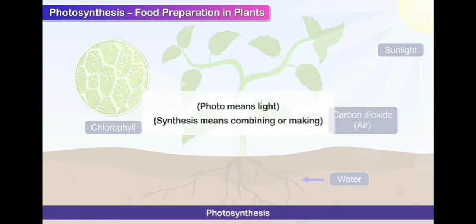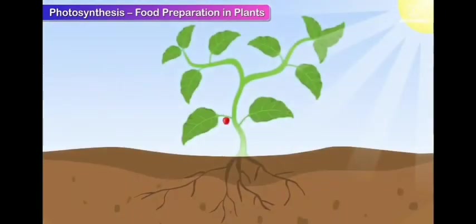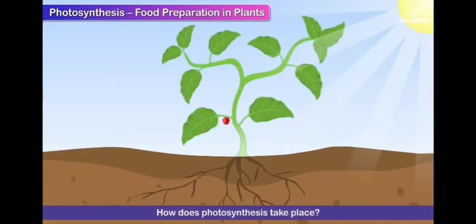In the equation form, if we have to write the process of photosynthesis, we can write it as carbon dioxide, water, light energy. When they combine together, they give glucose or we can say sugar plus oxygen. Plants make food in the form of sugar. You have to learn this that plants make food in the form of sugar only.